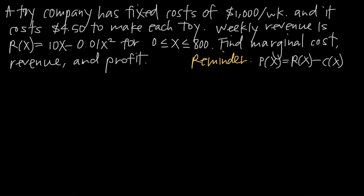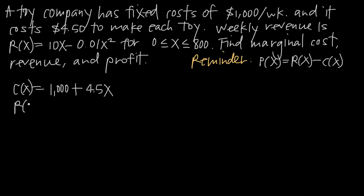From that information, we've been asked to find marginal cost, marginal revenue, and marginal profit. Before we can find those marginal functions, we first need to find functions for cost, revenue, and profit. The cost function C(x) is always fixed costs plus the per-unit cost times x. So C(x) = 1,000 + 4.5x. This makes sense — the company always pays $1,000, plus $4.50 for every toy they make. For example, making 10 toys costs 1,000 + 45 = $1,045. The revenue function R(x) = 10x − 0.01x² has already been given to us.